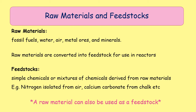However, a raw material can also be a feedstock. Technically, anything going into the reactor is a feedstock, but if you're asked to identify a feedstock it is better to pick something that has been processed first. If there are no processed chemicals in the question going into the reactor, just pick anything going into the reactor as a feedstock. A raw material is something that has not been processed, and typically a feedstock is something that has needed to be processed first.